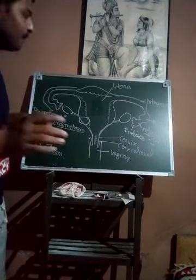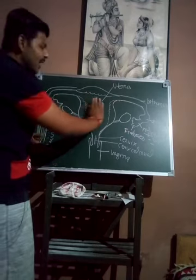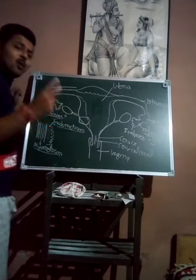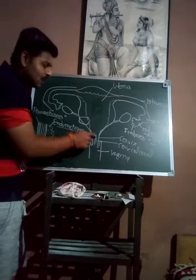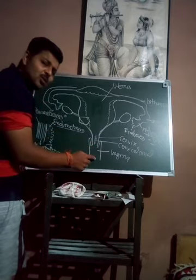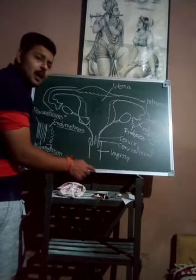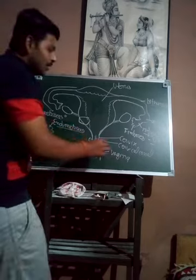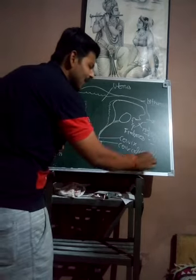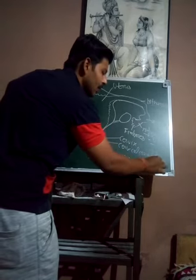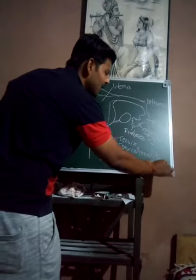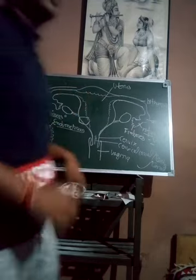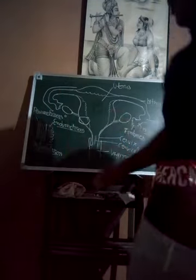The baby develops inside the uterus. When the baby comes to birth, it is first released through the cervical canal and then comes to the outside. The combined cervical canal and vagina are collectively known as the birth canal, because this is the canal through which the baby is expelled to the outside.